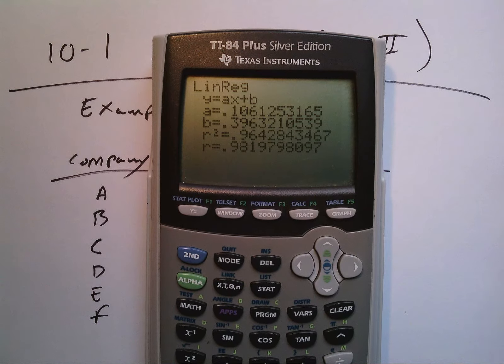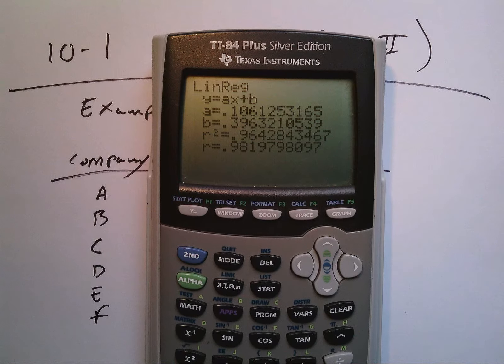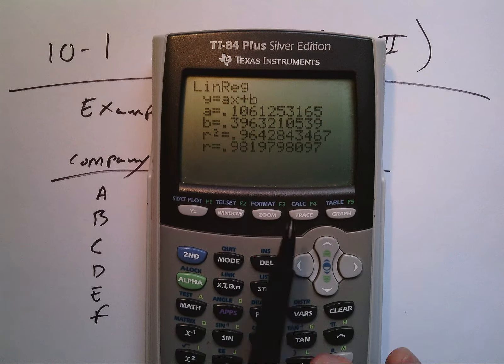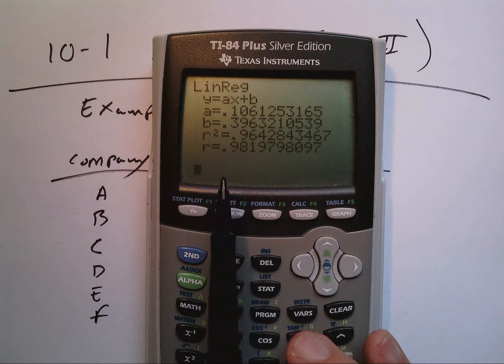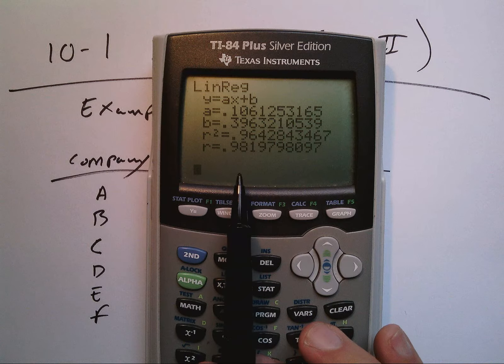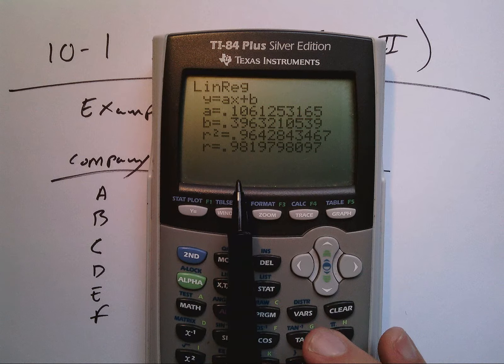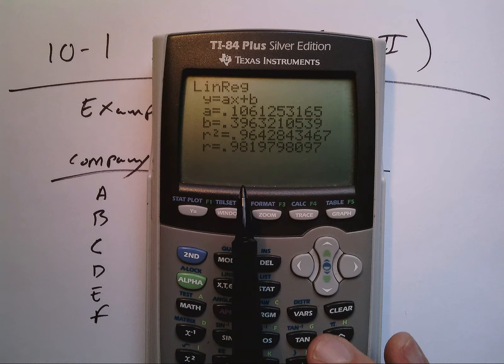What I'm interested in is the r value of 0.9819. This is really close to positive 1, so I could say that this has a really strong linear correlation, and it's a positive correlation.